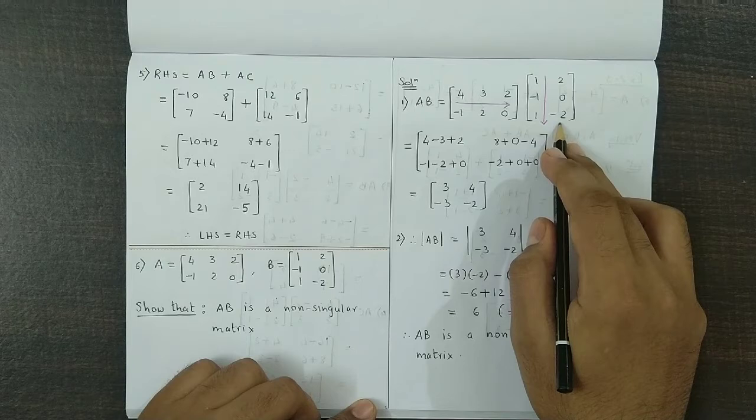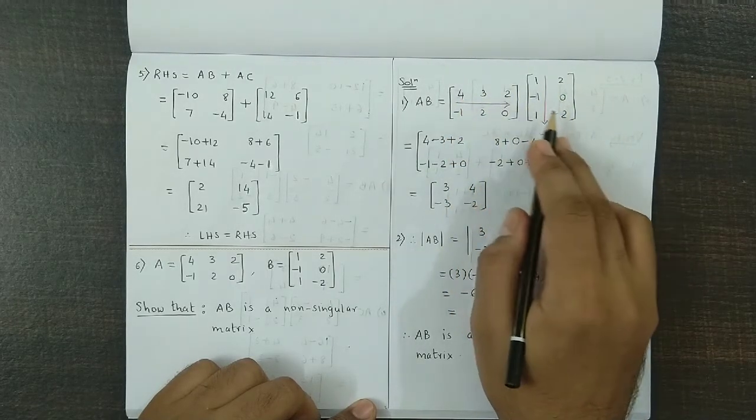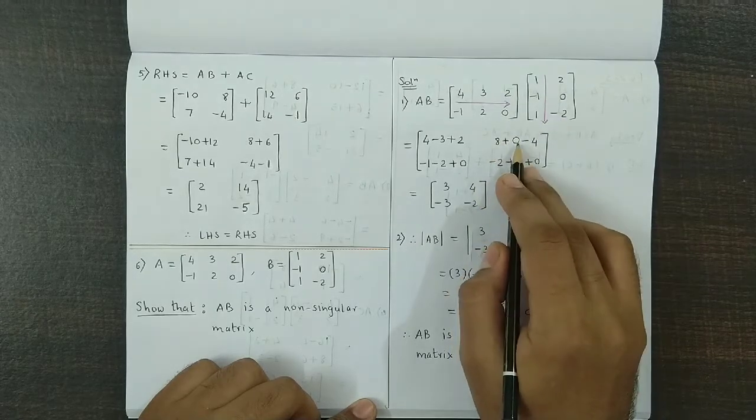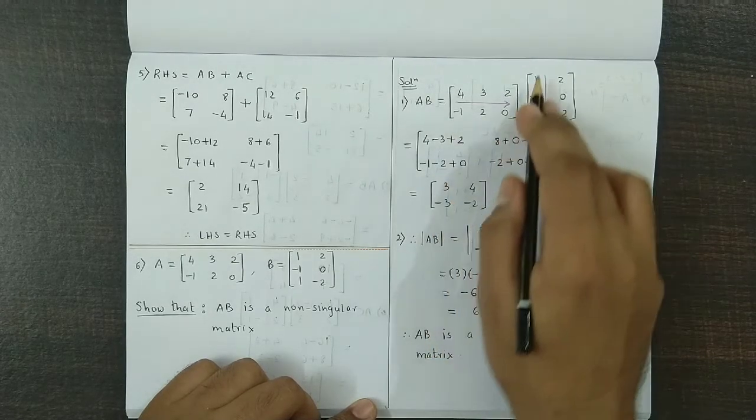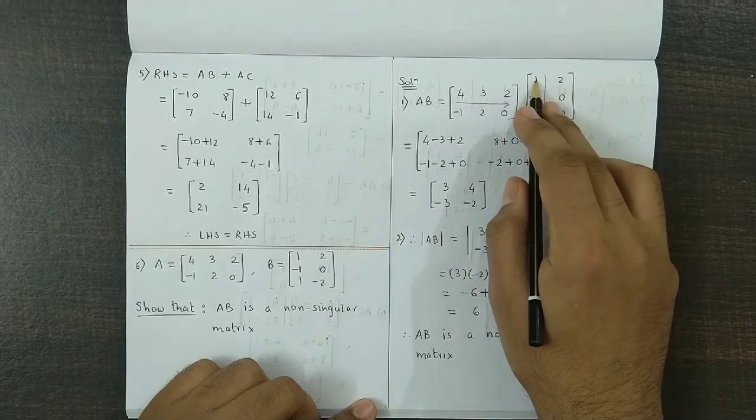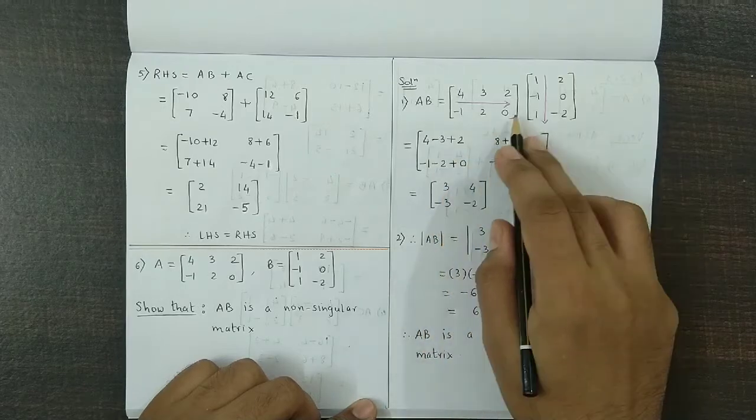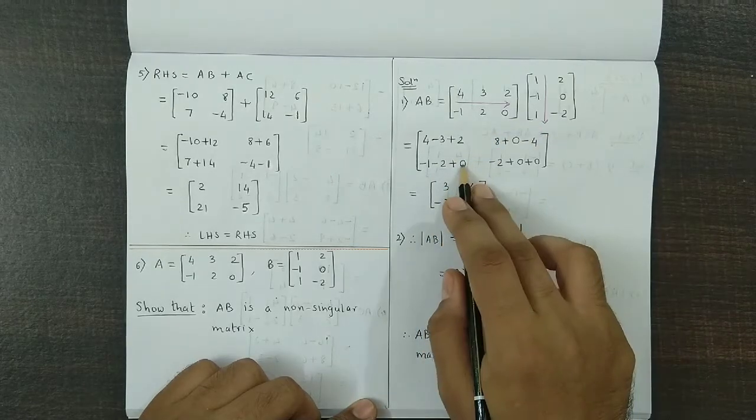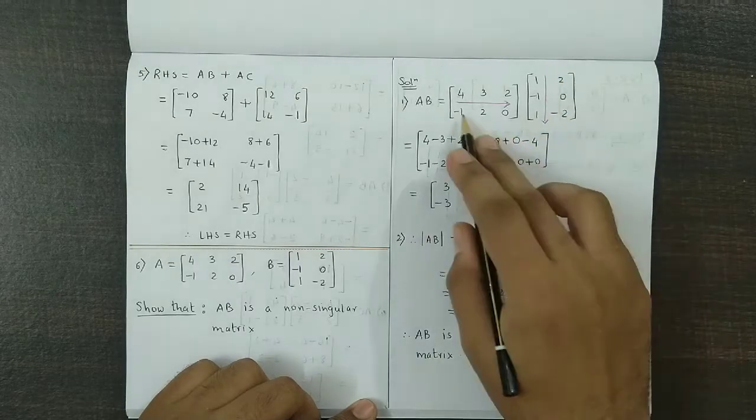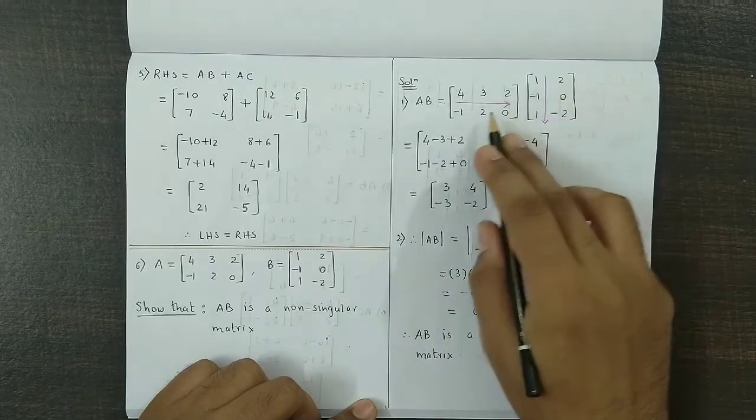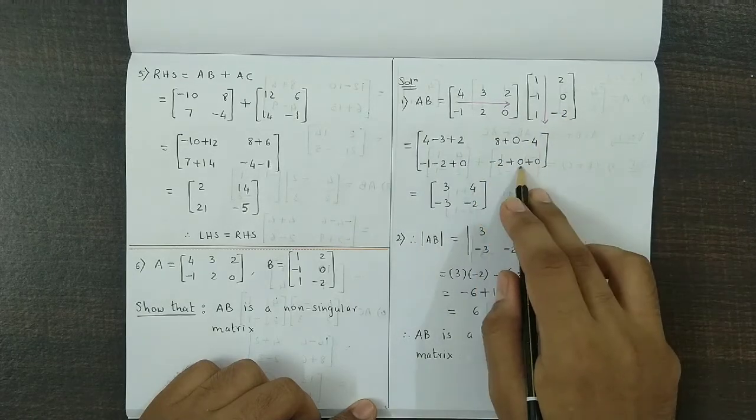Then R1 into C2, so 4 times 2 is 8, 3 times 0 is 0, 2 into minus 2 is minus 4, so we have 8 plus 0 minus 4. Next is R2 into C1, so minus 1.